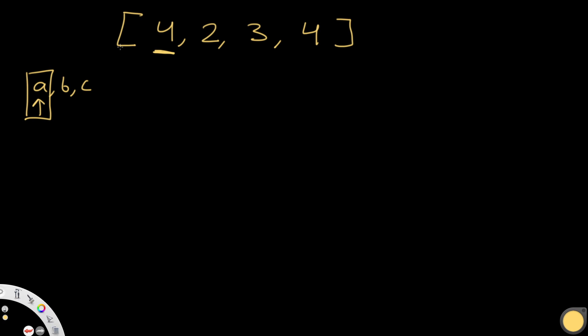After sorting, we'll have b as the smallest value and c as the largest value in our search space. We can find what the smallest and largest possible values are and thereby find all possible combinations. So for example, [4, 2, 3, 4] sorted becomes [2, 3, 4, 4].